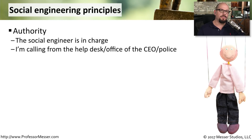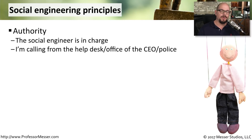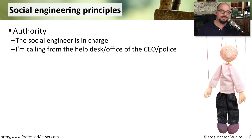There are a number of principles associated with social engineering. The first one is authority. The social engineer — the person who's trying to gain access — is going to pretend that they have some type of authority that allows them access to this information. They may say that they're calling from the help desk, that they're with the police department, or they might be with the office of the CEO, and instantly it might make us think that we need to provide this information to them.